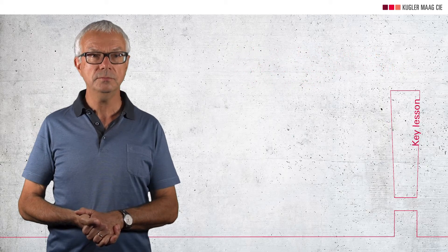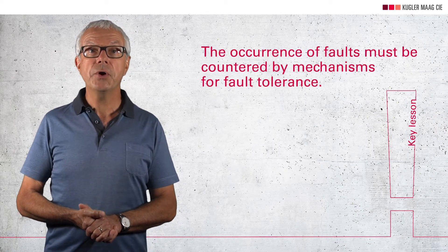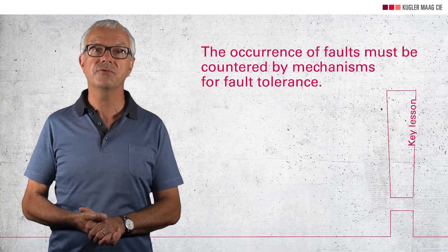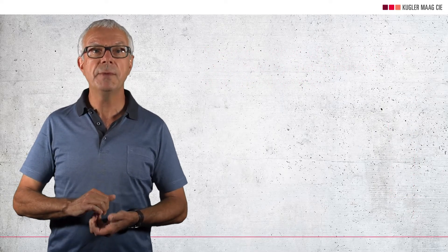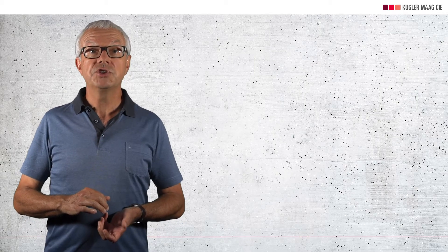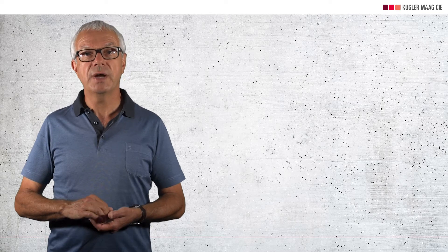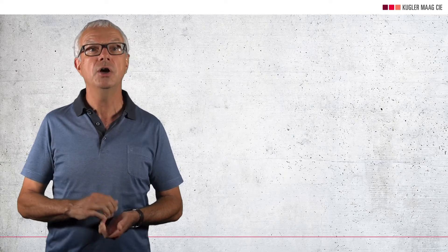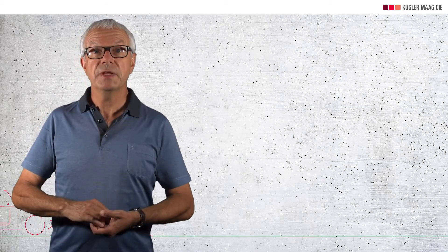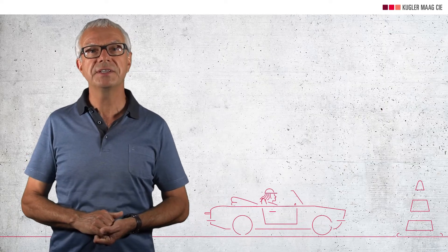Prevention is good, but it's no guarantee that a situation won't occur that wasn't thought about. Key lesson 3: the occurrence of faults must be countered by mechanisms for fault tolerance. Examples include checksums for messages or memory areas, checks on permissible value ranges when entering a software function, and more sophisticated approaches such as software running on safety microcontrollers to monitor whether the application software is still running correctly. Such software must bring the entire system and vehicle into a previously defined safe state when errors are detected.